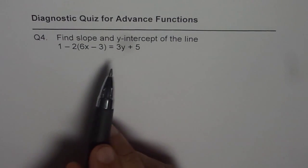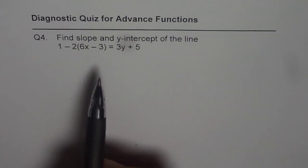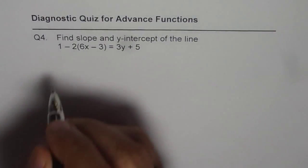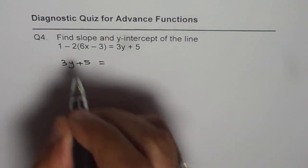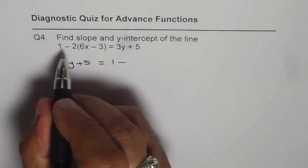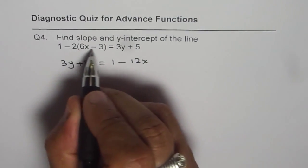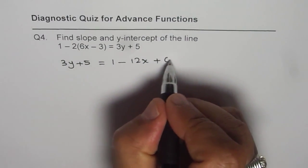Let's write down this equation in slope intercept form to get both slope and y-intercept. So we have 3y plus 5 equals 1 minus, let's open this bracket, get 12x minus 2 times minus 3 is plus 6.